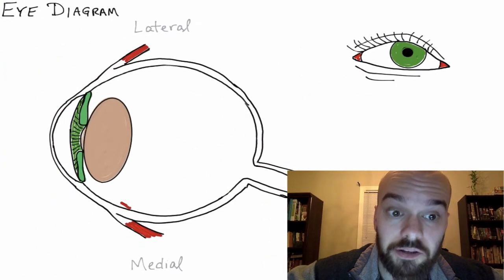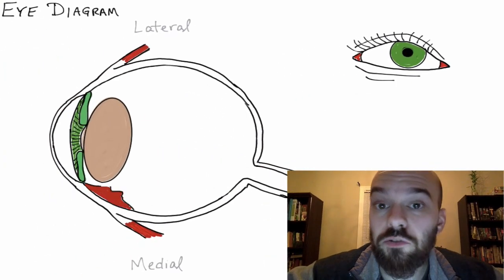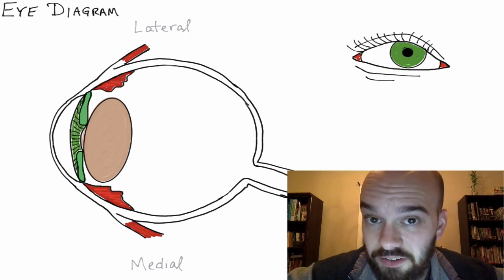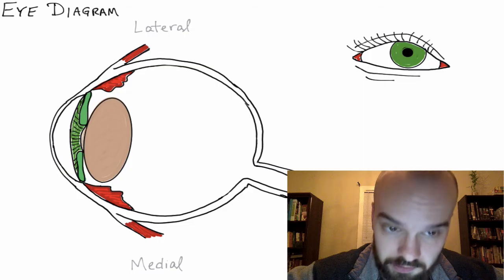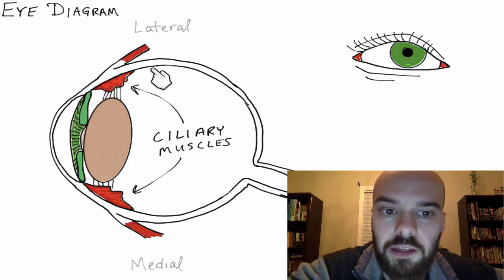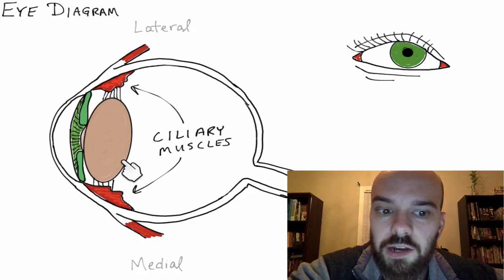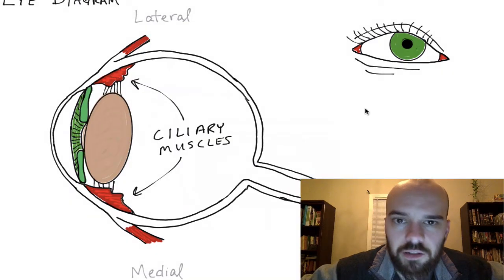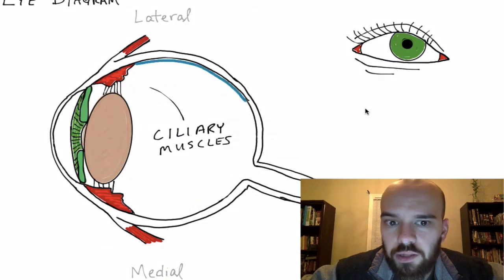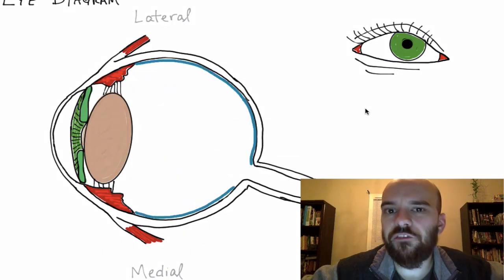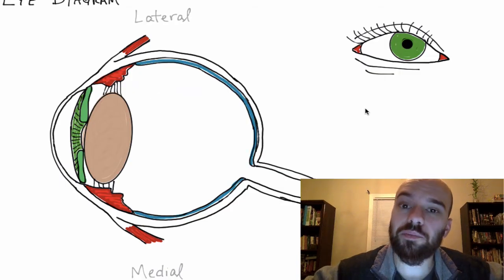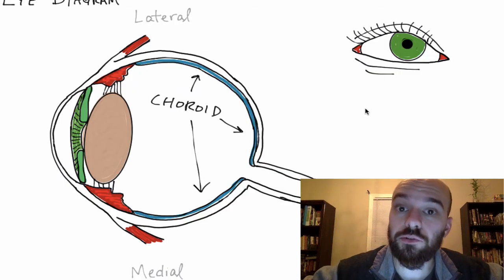After the iris, we have the two muscles that are going to help change the shape of the lens so you can see things far away and see things closely. Those are called the ciliary muscles. Inside of the sclera there's a layer called the choroid layer. The choroid is a vascular layer, meaning it's filled with blood vessels, and that's going to supply oxygen and nutrients to the retina.